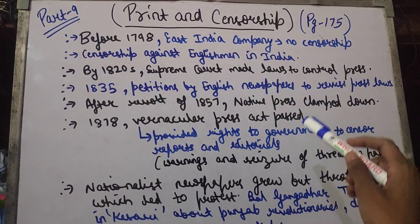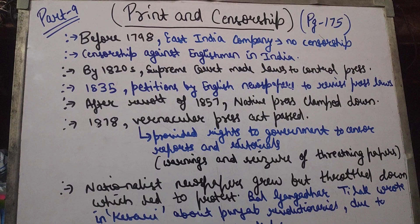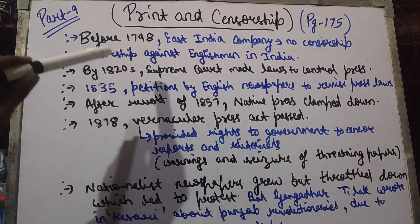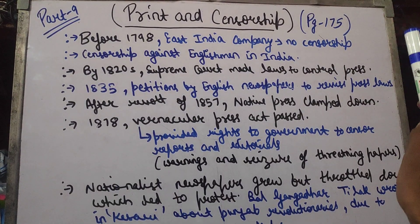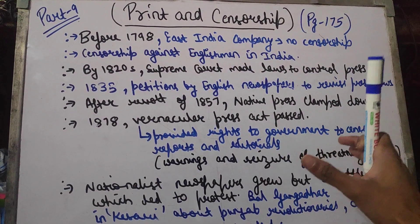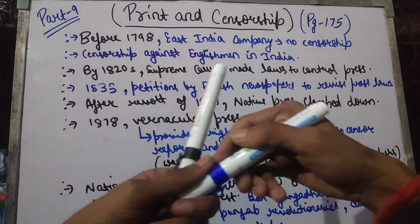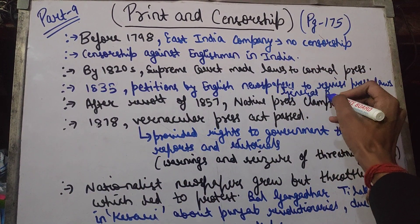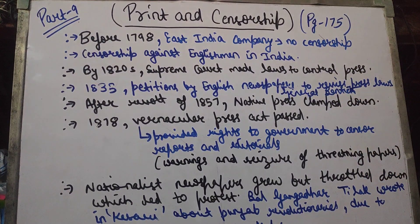In 1835, many English newspapers and Englishmen put a petition that the press restrictions had to be removed and freedom had to be given. What happened in 1835 is that the press law was revised. General Bentinck — you can remember the name of General Bentinck — returned press freedom. So in 1835, General Bentinck restored press freedom.